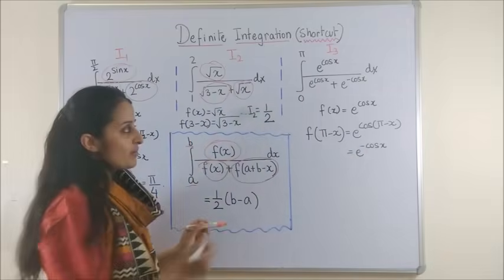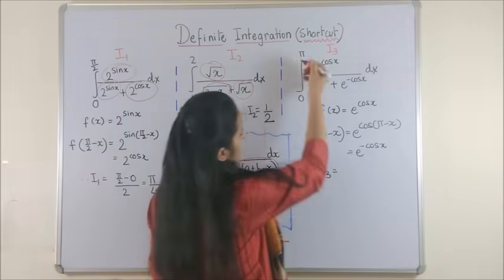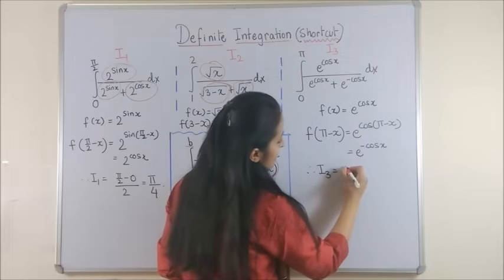Once again, the same format. So, the answer is b minus a, which is pi by 2.